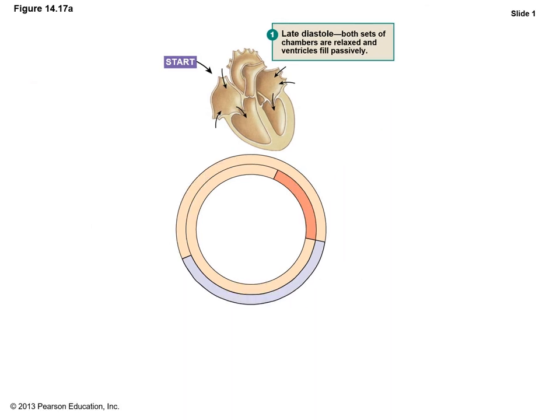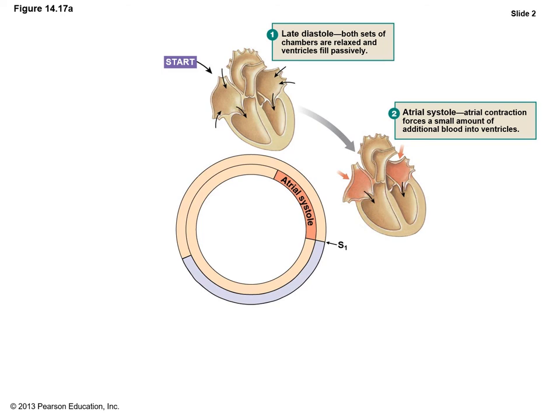We'll begin in late diastole — late ventricular diastole. Here, both sets of atria and ventricles are relaxed. The AV valves are open — the tricuspid and bicuspid valves — and blood is flowing into the atria and then into the ventricles. The ventricles are filling passively because the atria are not contracting yet. From here, we move into atrial systole. The SA node fires, initiating atrial depolarization. Following this, the atria contract and primer-pump the ventricles — forcing the remaining blood into the ventricles and increasing pressure from the atria into the ventricles, finishing atrial systole.